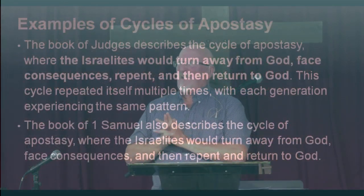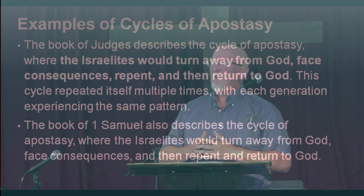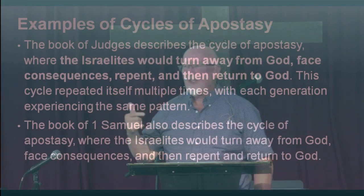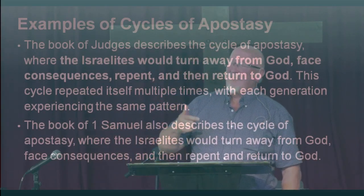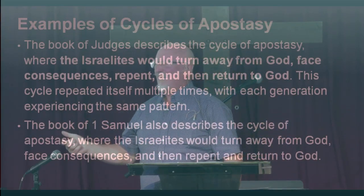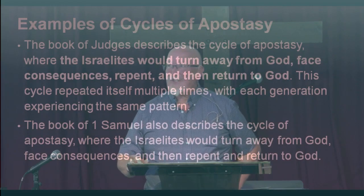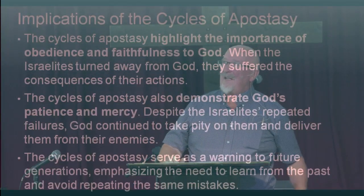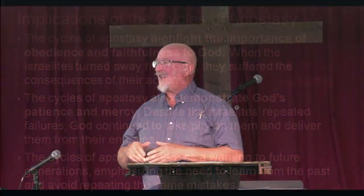The examples of the cycles of apostasy are, as Barry said, in the book of Judges, when the Israelites would turn away from God, face consequences, and then repent and return to God. The cycle repeated itself multiple times — it's like they didn't learn anything. They just kept doing it over and over again, the same thing happening to each successive generation. The book of 1 Samuel also describes these cycles of apostasy.